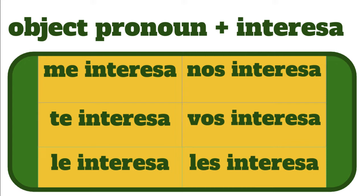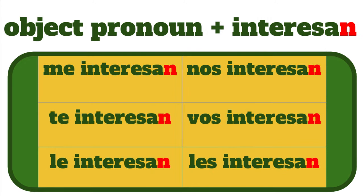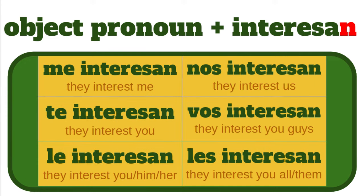We use the form interesa when we're talking about one thing that interests someone. Now, what about if we're talking about more than one thing? We're not going to say it interests me — we're going to say they interest me. To do that in Spanish, we add an N to the word interesa, so the forms become: me interesan, te interesan, le interesan, nos interesan, vos interesan, and les interesan. Me interesan means they interest me.